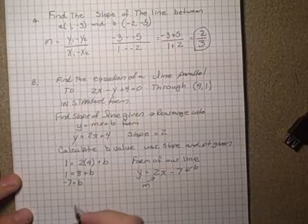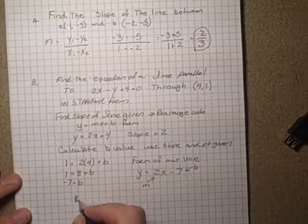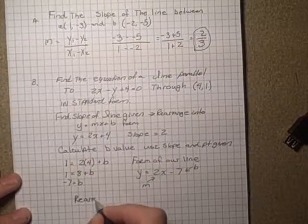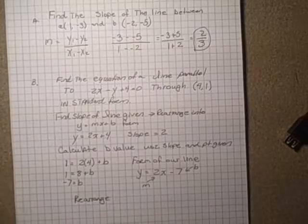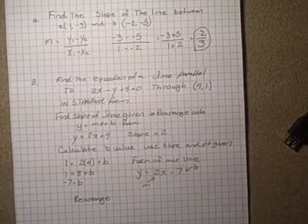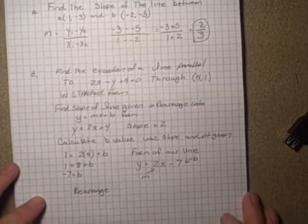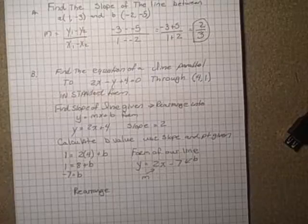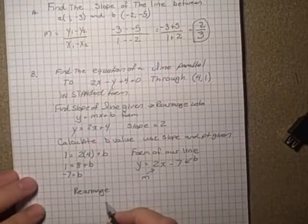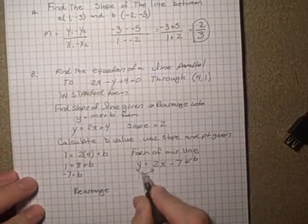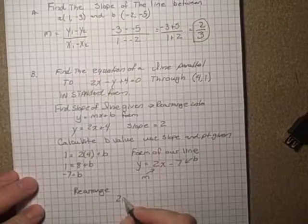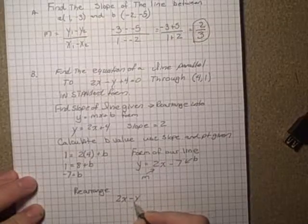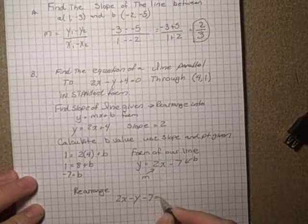So now what we would do is rearrange by bringing the y over. So 2x - y - 7 = 0.